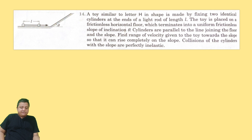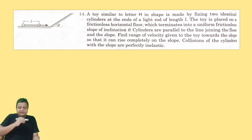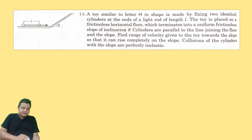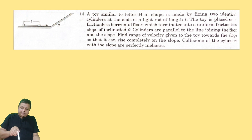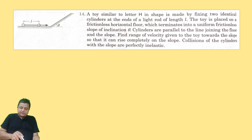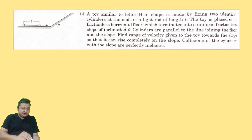A toy similar to the letter H in shape is made by fixing two identical cylinders joined by a light rod of length L. The toy is placed on a frictionless horizontal floor which terminates into a uniform frictionless slope of inclination theta. The cylinders are parallel to the line joining the floor and the slope.